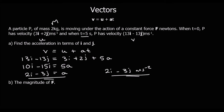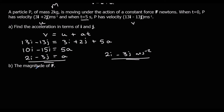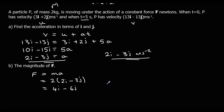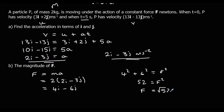Find the magnitude of f. So we're going to do f equals ma. m is 2, a we've just worked out is 2i minus 3j. So f is 4i minus 6j. We need to find the magnitude, so we'll do Pythagoras: 4 squared plus 6 squared equals f squared, 16 plus 36, so 52 equals f squared, so f equals square root 52 newtons.